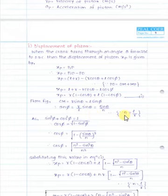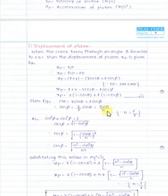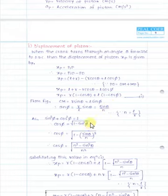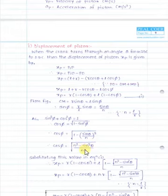Here we define n as the obliquity ratio, which is the ratio of the length of the connecting rod to the length of the crank: n = l/r. So r/l = 1/n, giving sin(phi) = sin(theta)/n. Since we require cos(phi), we use: cos²(phi) + sin²(phi) = 1, so cos(phi) = √(1 − sin²(phi)) = √(1 − (sin(theta)/n)²) = √(n² − sin²(theta))/n.